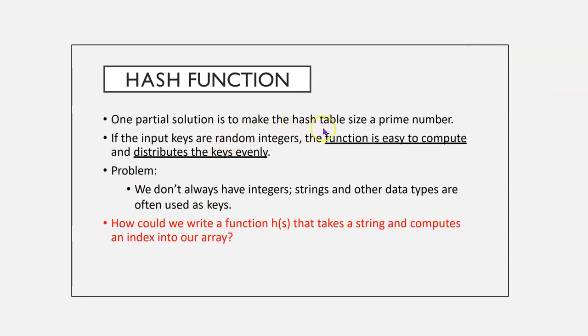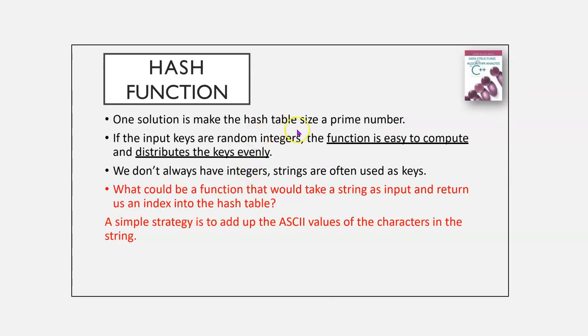One partial solution is to make the hash table size a prime number. This can help, but it's no guarantee. If the input keys are random integers, the function is easy to compute and distributes the keys evenly. We don't always have integers. Strings and other data types are often used. How could we write a function, h of s, that takes a string and computes an index?